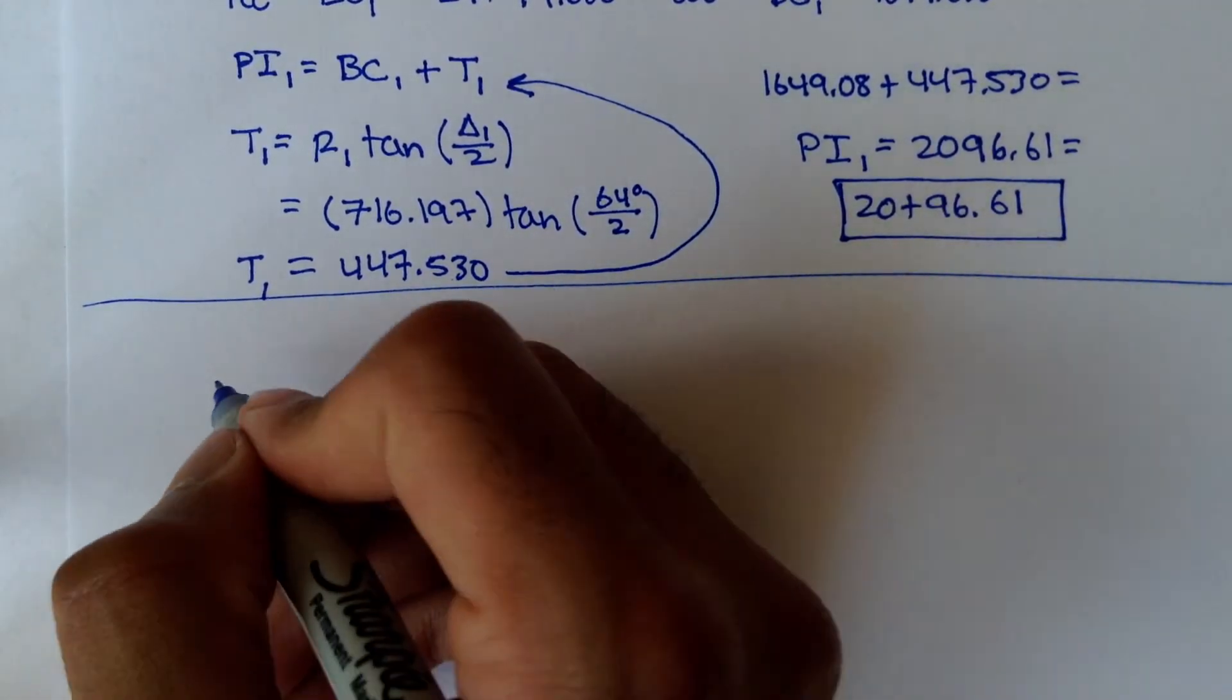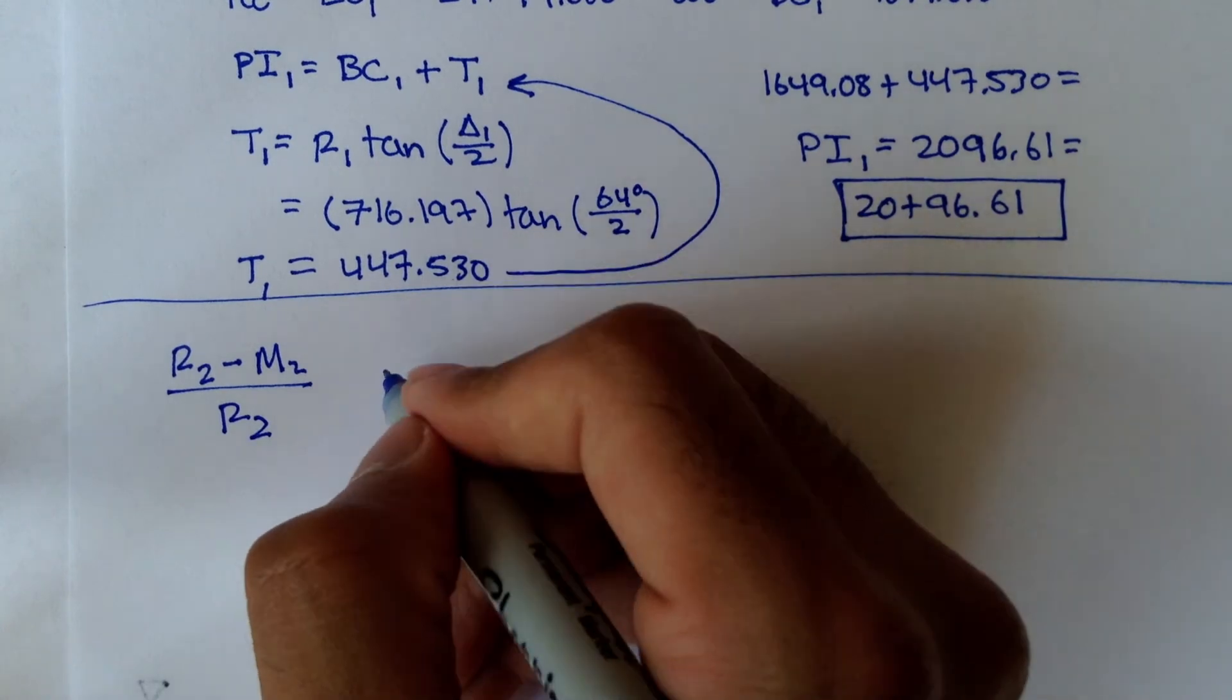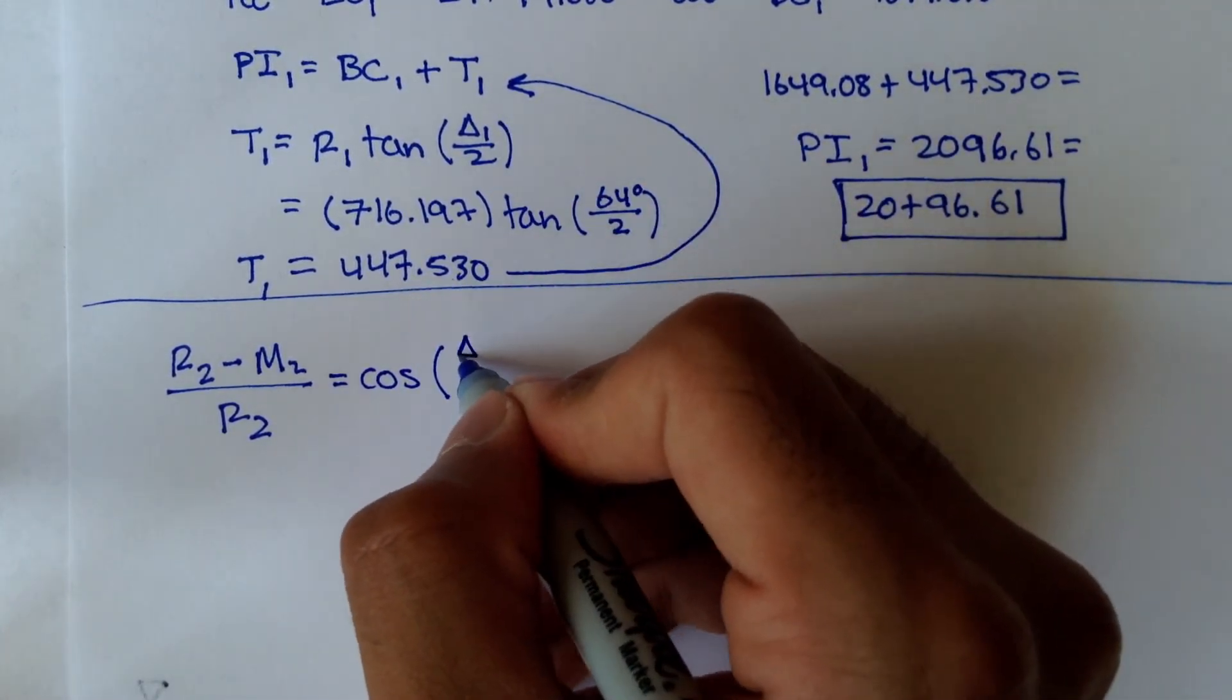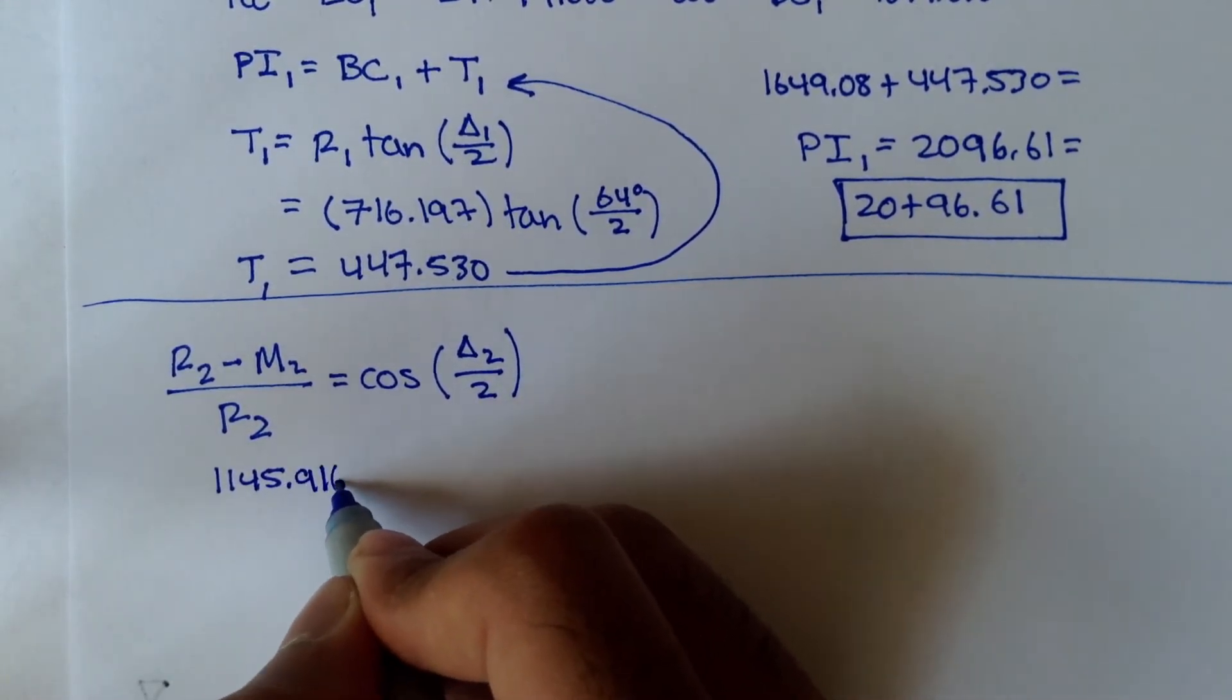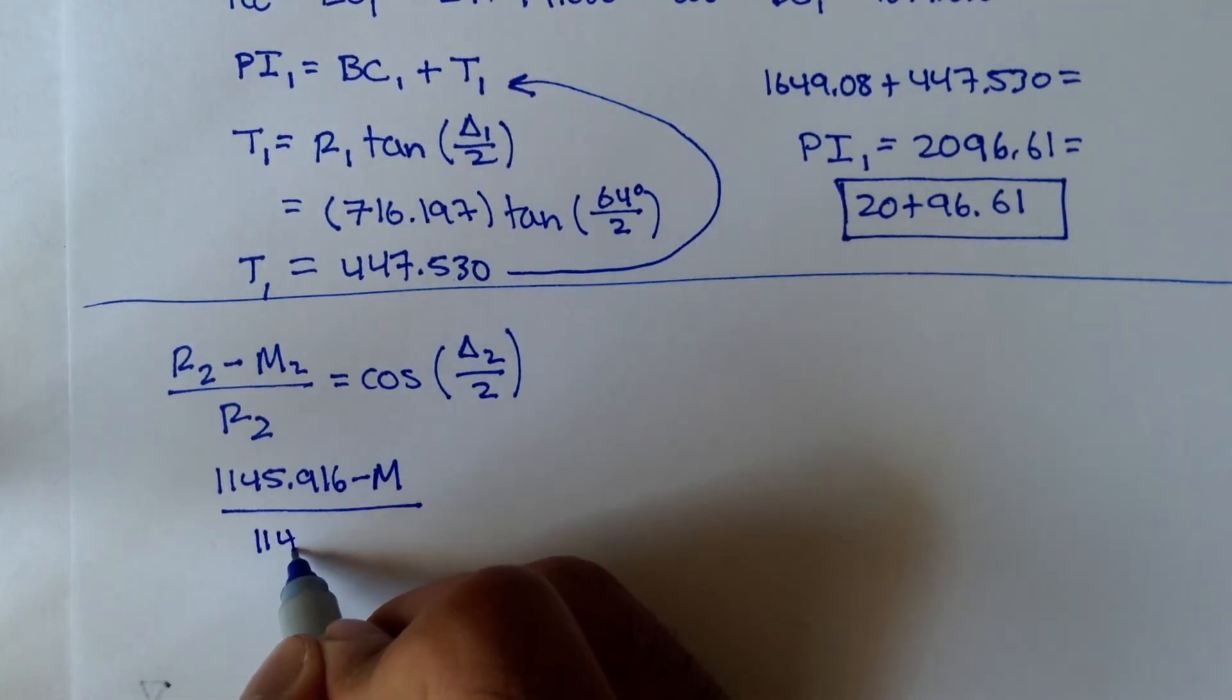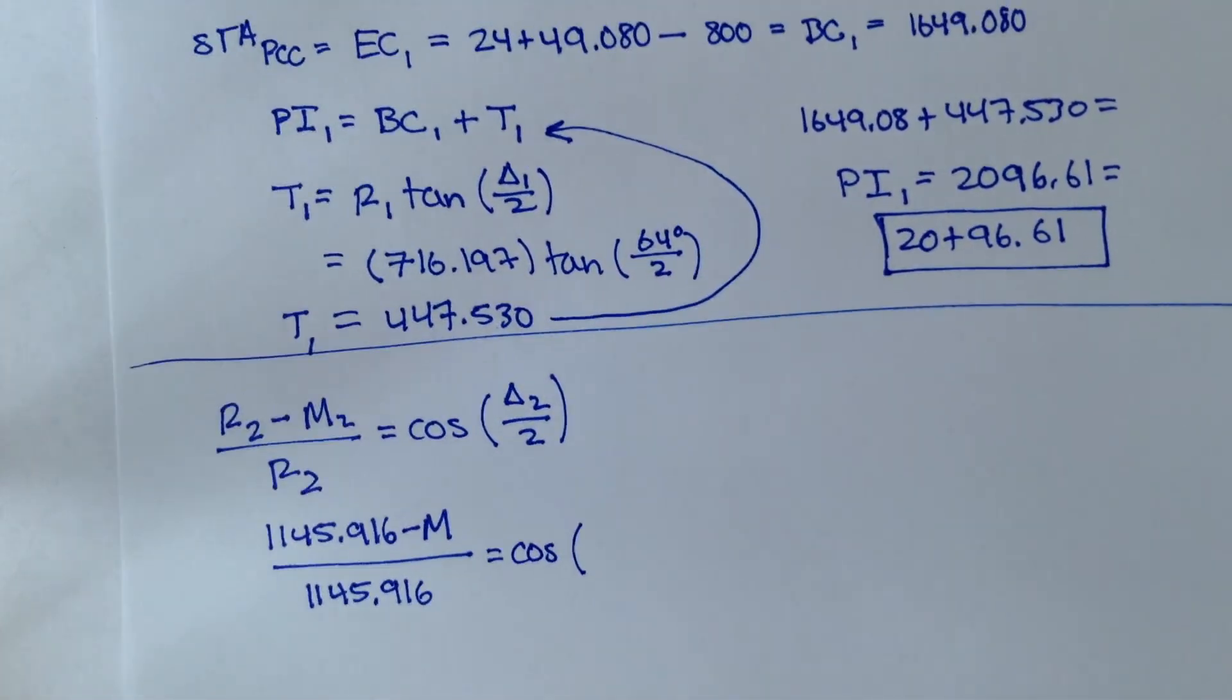Remember, the middle ordinate formula is radius minus M over radius is equal to cosine delta over 2. And radius 1, I'm sorry, radius 2 is 1145.916